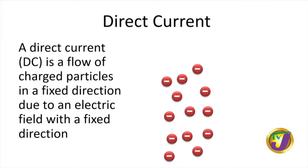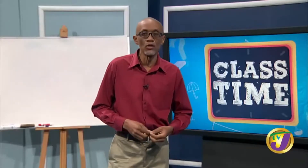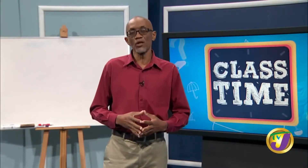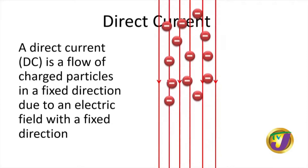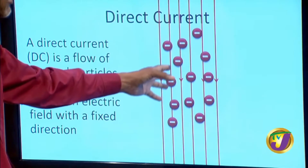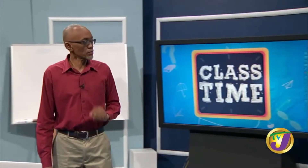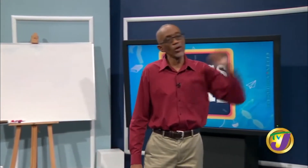We'll start with direct current. Most of the currents that we use, like from batteries and cells, are direct currents. A direct current is a flow of charged particles — as a matter of fact, any electrical current is a flow of charged particles in whatever medium, whether it be in metals, semiconductors, or electrolytes. A direct current is a flow of charged particles in a fixed direction, due to an electric field which is also in a fixed direction.